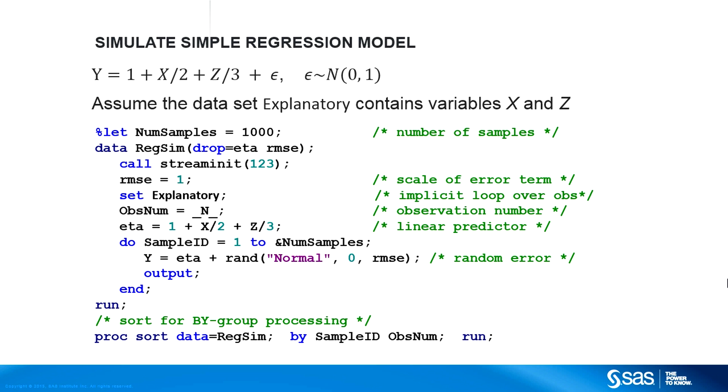Here's an example of a simple regression model for two continuous regressors. This example uses the x and z values from the explanatory data set. 1,000 regression samples are simulated. For each sample, the y variable is created as a linear combination of the regressors plus a random error. The parameters for this model are 1, 1 half, and 1 third. So if you run a linear regression on any one sample, the parameter estimate should be close to those values.